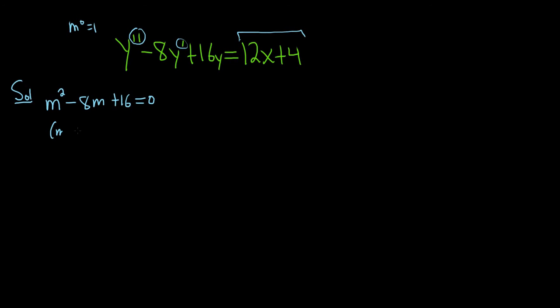This should factor. This is m minus 4 times m minus 4. If you do m times m, you get m squared. Negative 4m plus negative 4m is negative 8m. And negative 4 times negative 4 is 16.